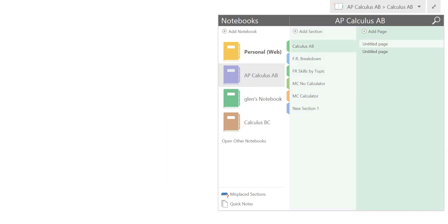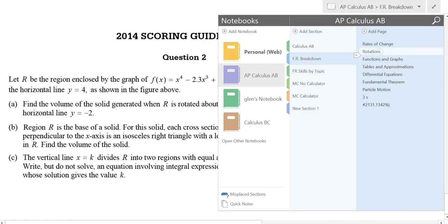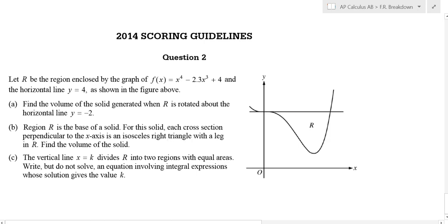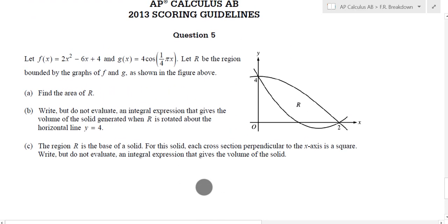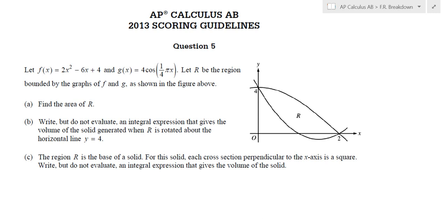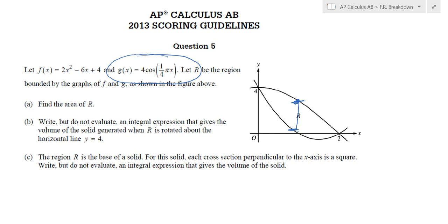Here's an AP exam example where they give you a graph — y equals negative 2 and another curve — they call this region r, and the first question is usually find the area. This is 2013 question 5, which means no calculator. They gave you a trig function, so you've got to know your trig. If you don't, the best you can do is set up the integral. Usually the answer is worth two or three points — you get points for the integral and points for the actual answer.